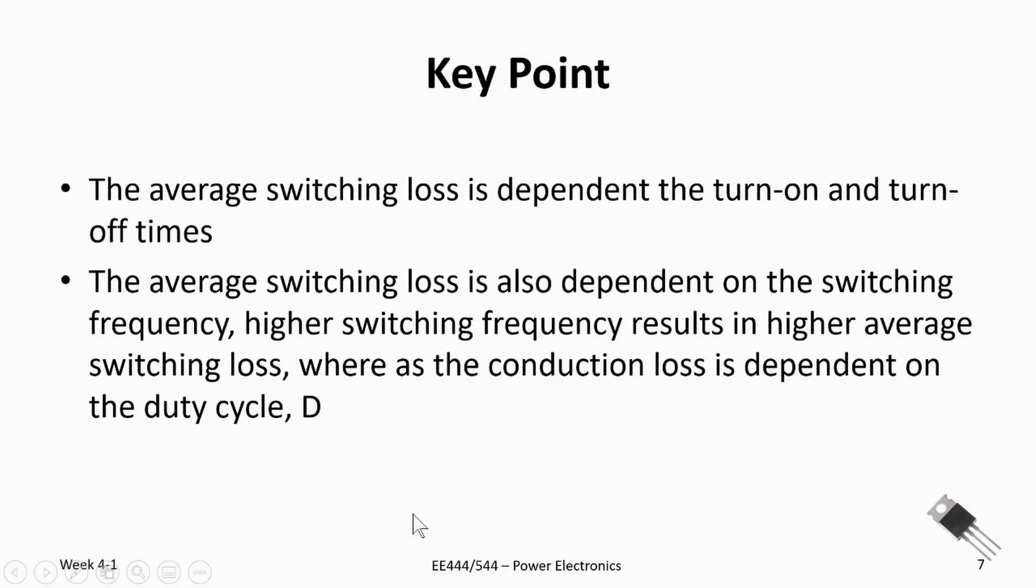So let's review the key points. In this video, we showed the average switching loss was dependent on the turn-on and turn-off times. It was also dependent on the switching frequency. Higher switching frequency resulted in a higher average switching loss, whereas the conduction loss was only dependent upon the duty cycle. So that kind of formulates all the losses we need for that DC-to-DC converter. In the classroom period, I think I'm going to work on some numeric examples on how we can put all this together and help with the design of a DC-to-DC converter. Thanks for watching.